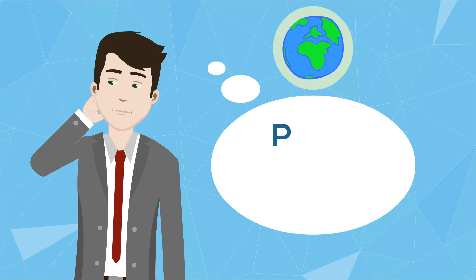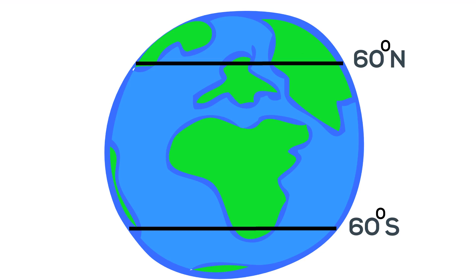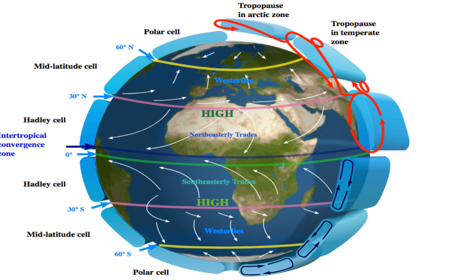Up first are the polar easterlies. They blow from the northeast in the north and the southeast in the south. These belts extend from the poles to 60 degrees latitude. The polar easterlies are formed as cold, sinking air moves from the poles towards 60 degrees north and 60 degrees south latitude.